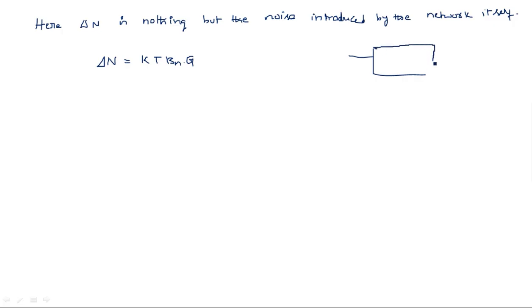Consider a practical receiver. An ideal receiver only produces thermal noise, which is fixed — we cannot change the Johnson noise. A practical network or practical receiver has noise bandwidth BN and gain G; these two parameters are fixed and will not vary. Now, what about the temperature? At what temperature is this network producing noise? That is the important factor here. So T now becomes TE.